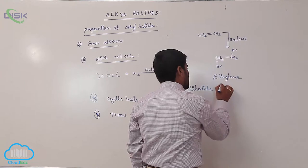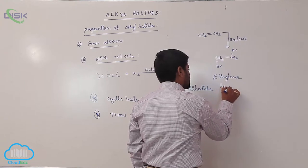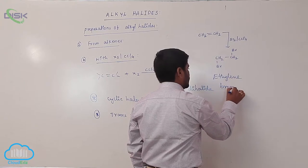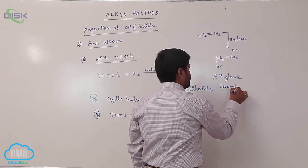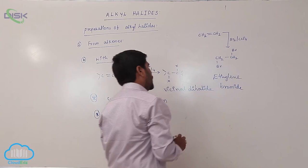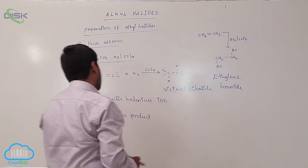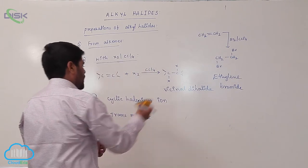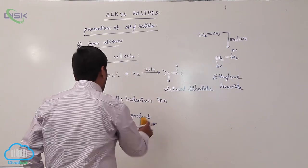Ethylene bromide — which one? Ethylene bromide. It is a dihalo compound.